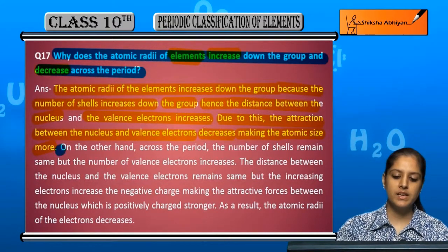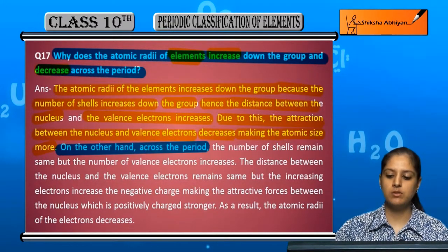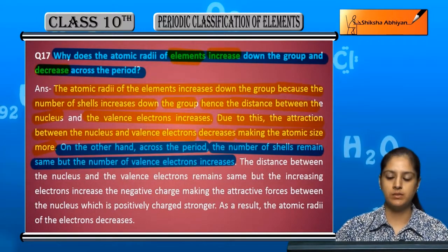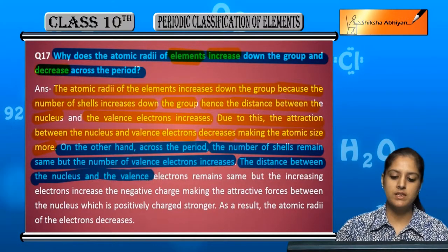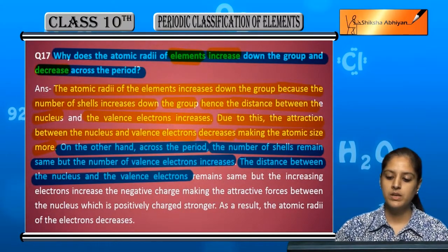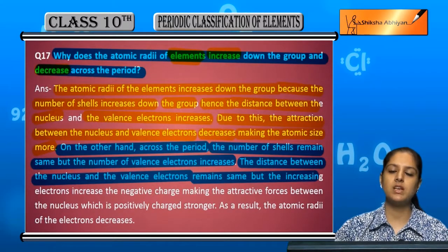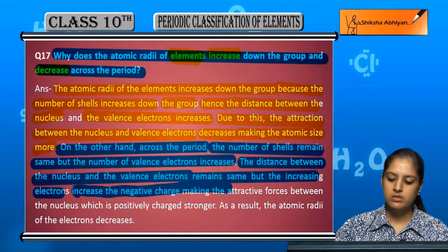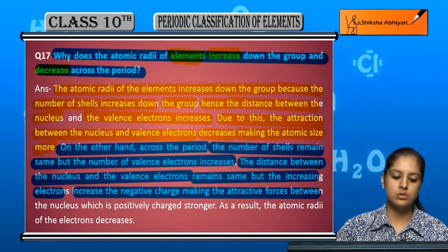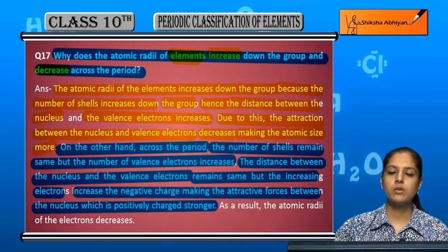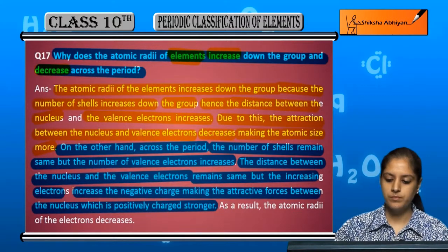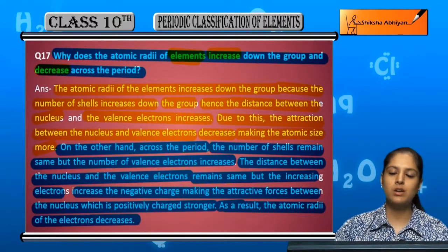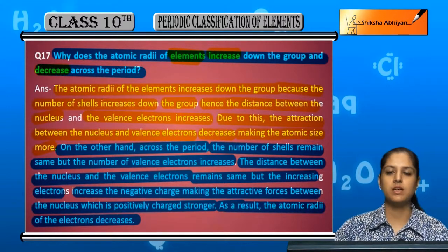But when we talk about a period, the shells are the same. The distance between the nucleus and the electrons is the same, but the charge is increased. The valence electrons are the same, but the nuclear charge increases, so the nucleus pulls the electrons closer and the radius decreases.